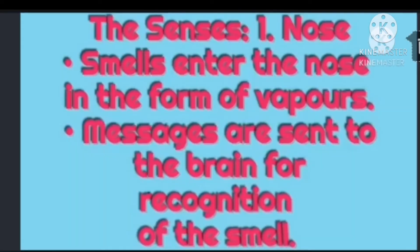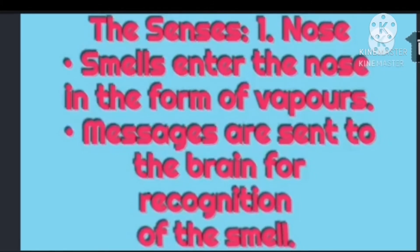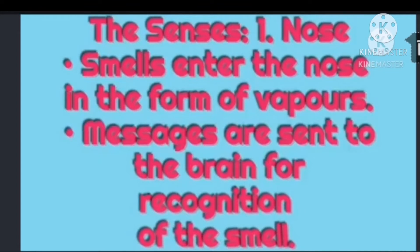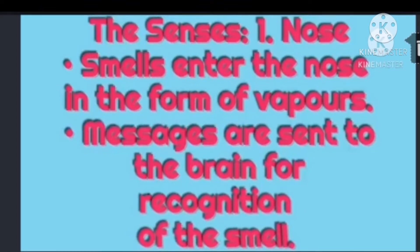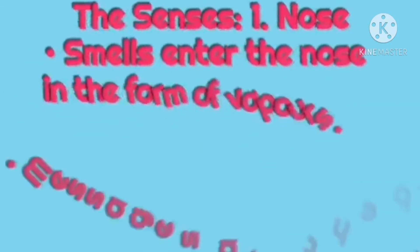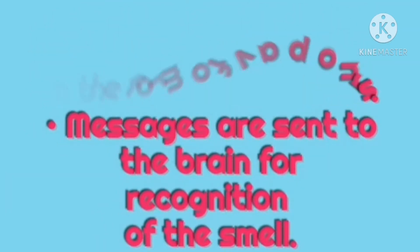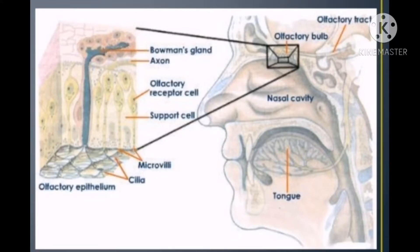First I will discuss the senses. The nose - smells enter the nose in the form of vapors and messages are sent to the brain for recognition of the smell. Here I will discuss this diagram briefly. The nose has two cavities separated from one another by a wall of cartilage called the septum, and the external opening known as nares or nostrils.